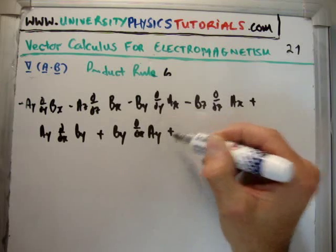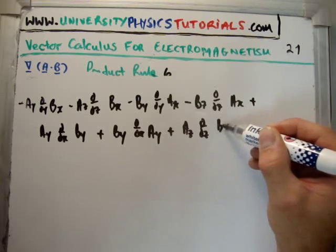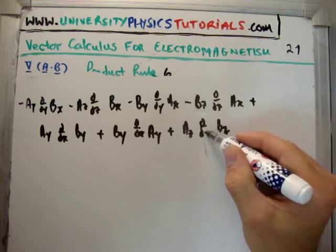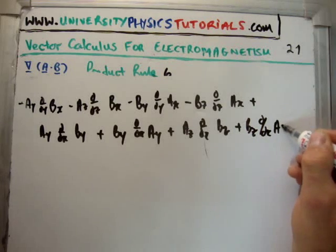And finally, the last two terms, plus A sub Z del/delZ B sub Z, that's actually del/delX, and we are going to have plus B sub Z del/delX and we are going to have A sub Z.